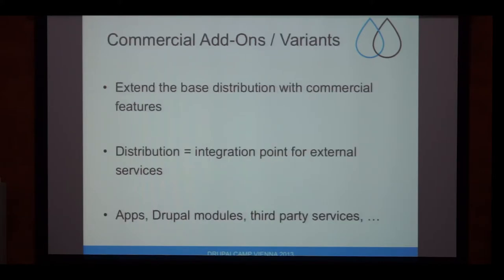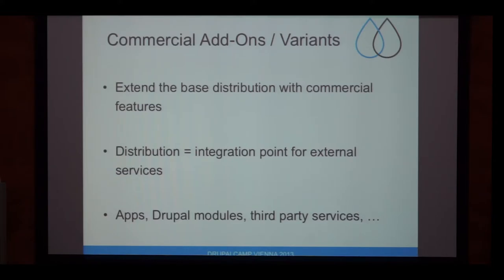The last and most interesting business model is selling commercial add-ons. It's complex because it might conflict a bit with the GPL. The basic idea is that you publish your base distribution and base feature set, but have some commercial add-ons for which you can charge your customers. See your distribution as an integration point — people download it, use it, and if they like it extended, they come back to you. Extensions can be apps with a feature set, Drupal modules, or services such as a payment provider, an analytics tool, a search feature, a recommendation engine, and so on. You can implement the services yourself or act as an intermediary for third parties.